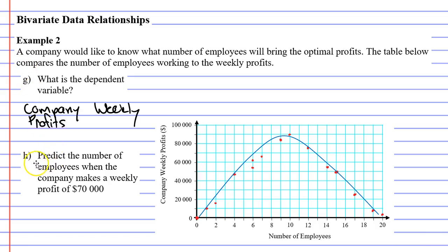Finally, question H wants us to predict the number of employees when the company makes a weekly profit of $70,000. This time we're kind of doing the prediction in reverse at $70,000.